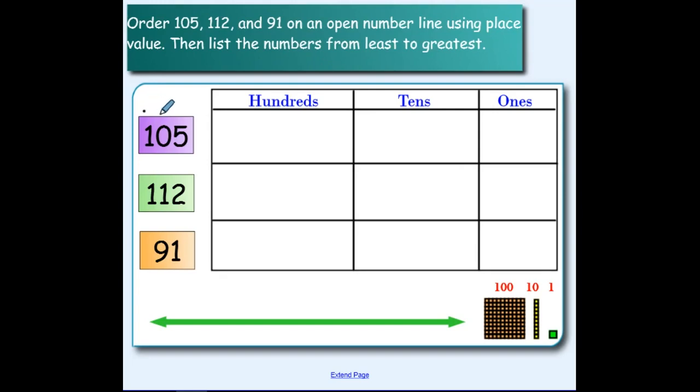105 has three digits. One hundred has the same value as one flat. Zero tens means there's nothing there, so we're going to leave the tens place value box empty. There are five ones, which has the same value as five cubes: one, two, three, four, and five.